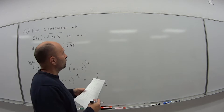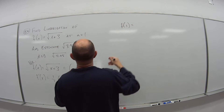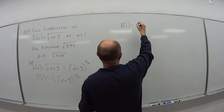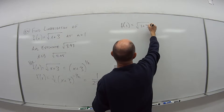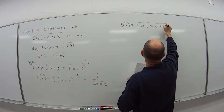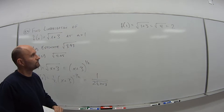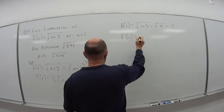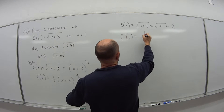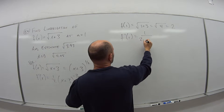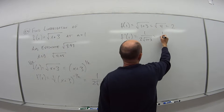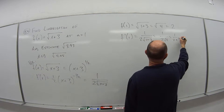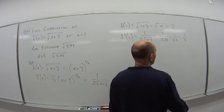At the point a = 1: f(1) = √(1 + 3) = √4 = 2. I also need f′(1), which is 1 over 2 times √(1 + 3) = 1 over 2 times √4 = 1 over 2 times 2 = 1/4.